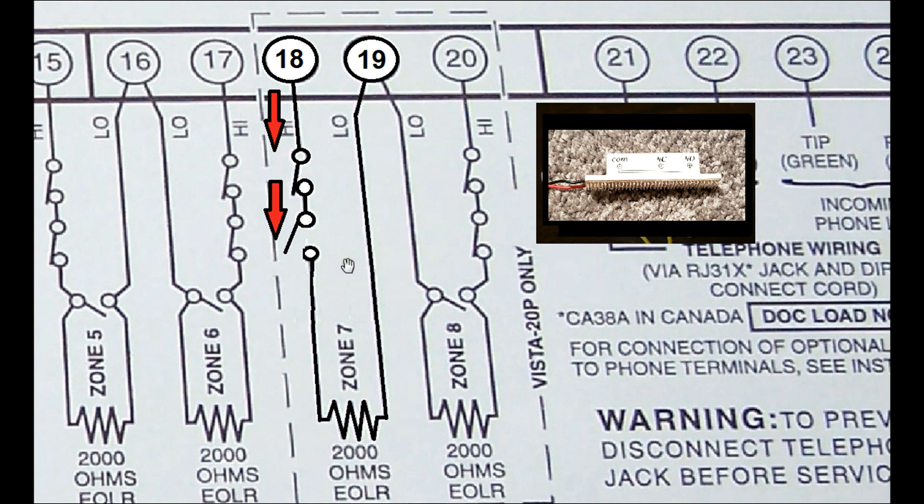If one of your sensors should happen to detect an intrusion, such as someone opening a door, the switch for that sensor opens. The electricity can no longer get past that switch. Your return contact number 19 will notice the absence of the electricity and set off the alarm.